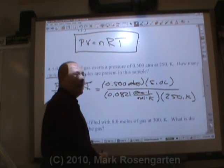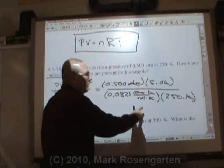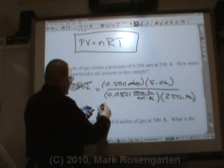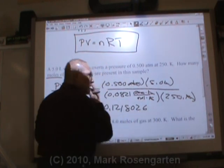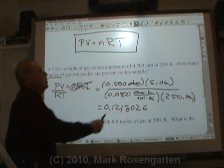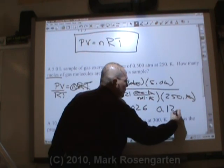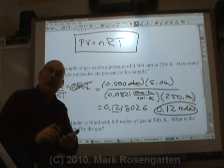Look what this proportionality constant does for us. Atmospheres? Bye. Liters? Bye. Kelvin? Bye. Leaving us with moles, which is what we're trying to find out. And this comes out to 0.1218026. How many sig figs? Two sig figs. 0.12 moles. And that's how many moles of gas are trapped in there.